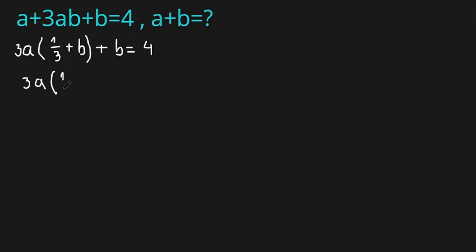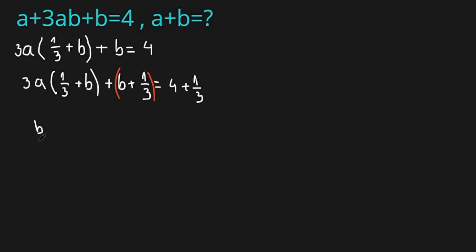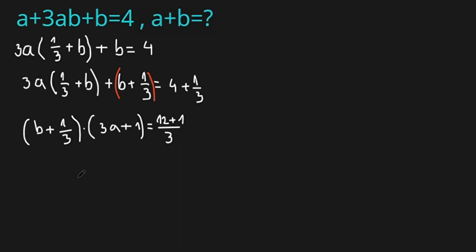We have 3a(1/3 + b). Now let's add 1/3 to both sides to get a common factor, so we have (b + 1/3) plus b + 1/3 equals 4 + 1/3. Since b + 1/3 is a common factor, we can take it out: (b + 1/3)(3a + 1) = 12 + 1/3.